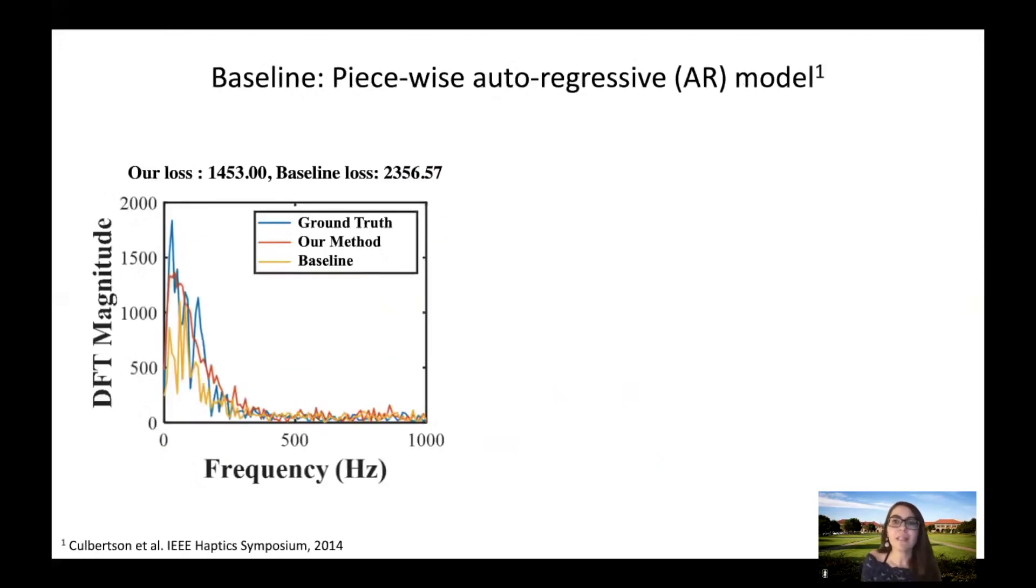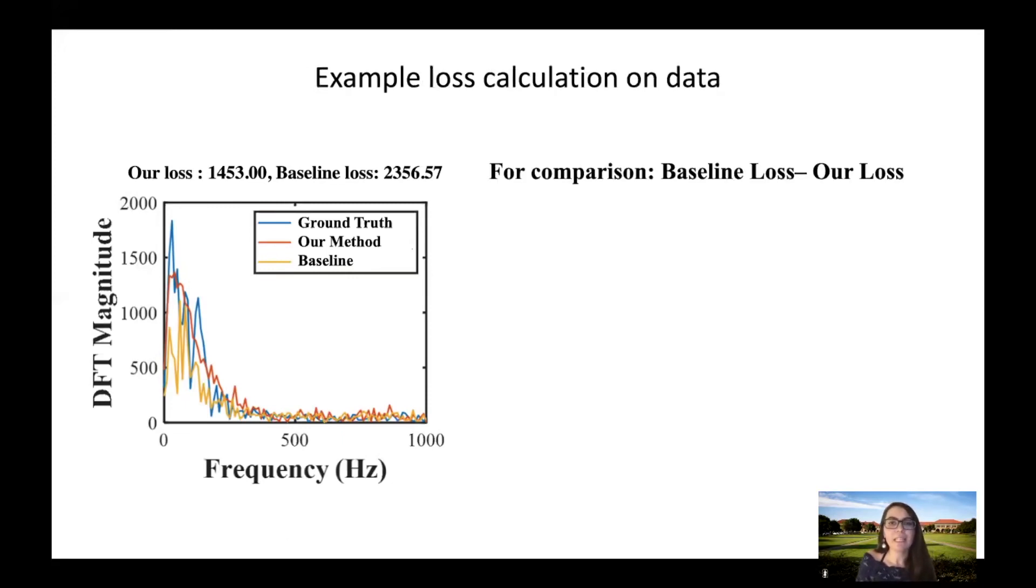Note that loss 1 minus loss 2 is positive when model 2 is outperforming model 1. Using this explained comparison method, we compare our model to the piecewise autoregressive model used in a paper by Culbertson et al., which is a state-of-the-art method for vibration-based texture rendering. For comparison, we look at the value of the baseline loss minus our model's loss. This value is positive when our model is outperforming the baseline. We calculate this value for all the data points in the test set and report the average as well as 25 and 75 percent quartiles per material.